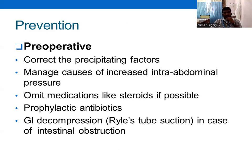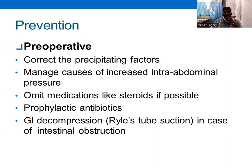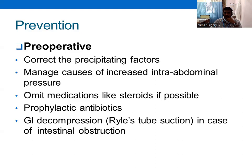For prevention, pre-operatively correct precipitating factors and manage causes of increased intra-abdominal pressure. Relieve distended bowel intraoperatively. Post-operatively insert an NG tube and Foley's catheter to relieve intra-abdominal pressure. Omit medications like steroids where possible, as they increase infection risk and chances of burst abdomen. Give prophylactic antibiotics and GI decompression; use long-tube incisions in cases of intestinal obstruction.